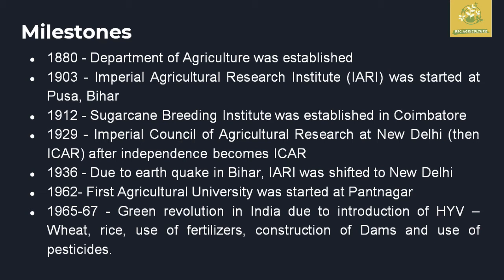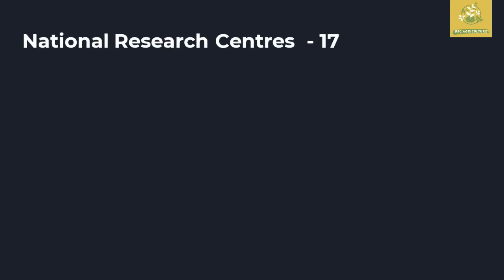In 1965 to 1967, the Green Revolution in India took place, with the introduction of high-yielding varieties of wheat and rice. Commercial use of fertilizers, construction of dams, and use of pesticide rules were also established during that period. After this, we will look at the 17 national research centers.